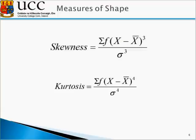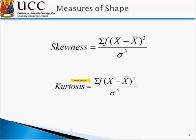The next thing we have to calculate are our measures of shape, so our skewness and our kurtosis measure. We note for skewness, we have a component which looks quite similar to what we have seen before — it's the sum of f times x minus x-bar to the power of 3, while kurtosis is the sum of f times x minus x-bar to the power of 4. We note that we have the same standard deviation value to the power of 3 in skewness and to the power of 4 in kurtosis.